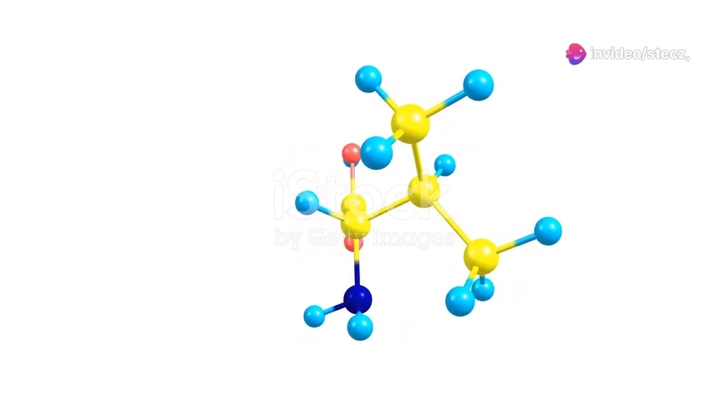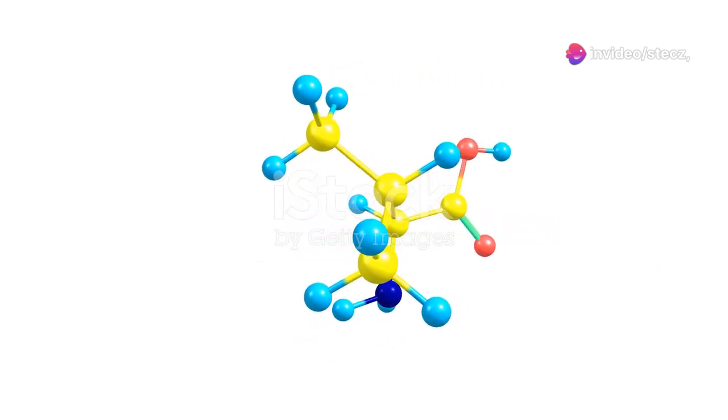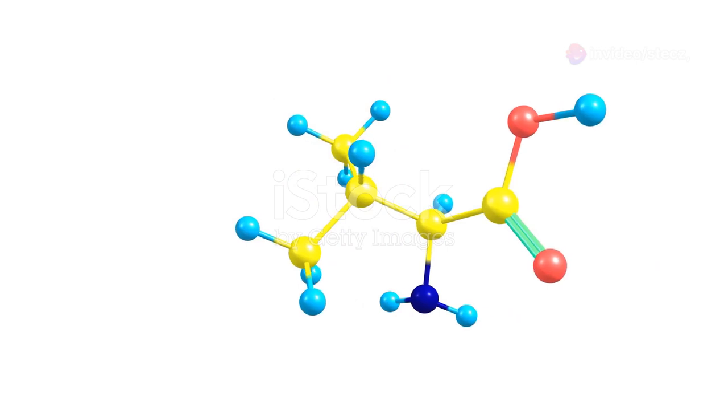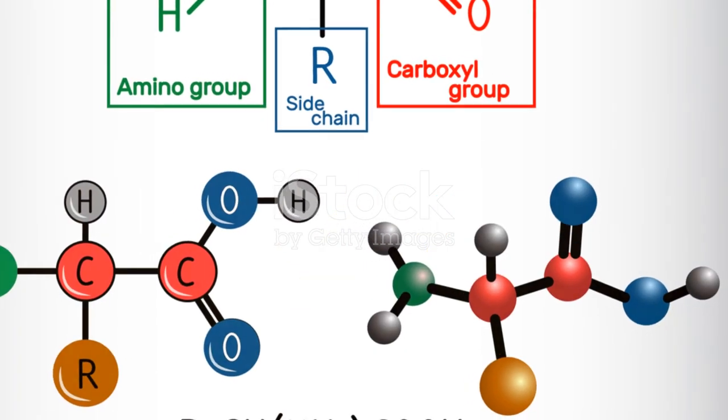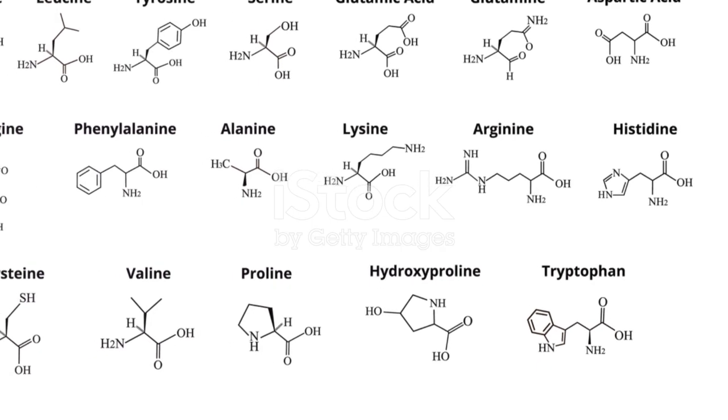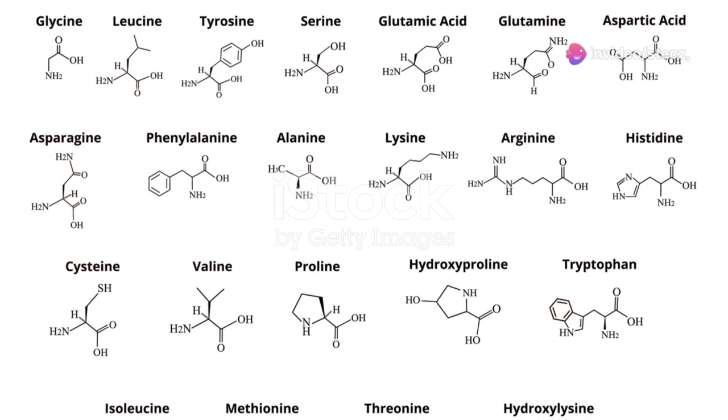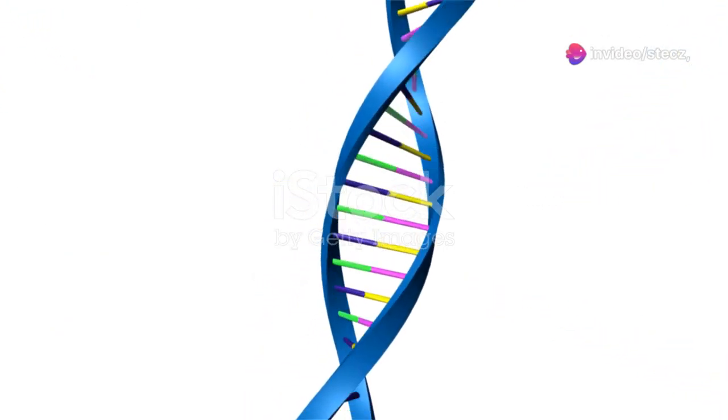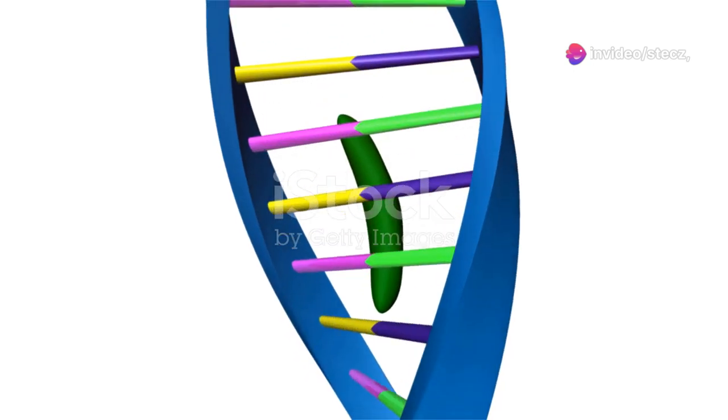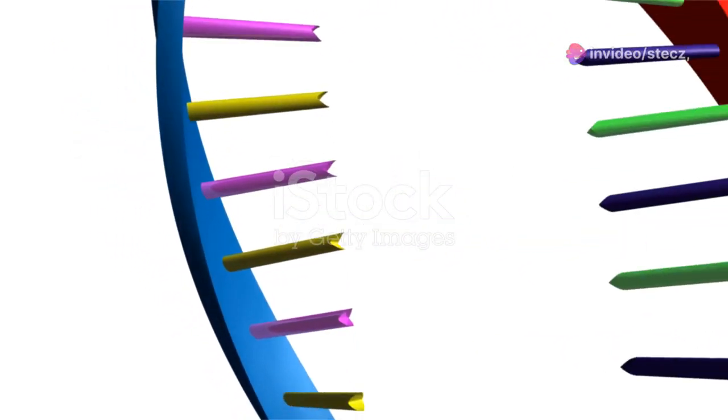Nitrogen is a key component of the amino group, highlighting its essential role in the formation of these vital molecules. Plants possess the remarkable ability to synthesize all 20 amino acids required for protein synthesis. Nitrogen, therefore, plays an indirect yet crucial role in shaping the vast repertoire of proteins that underpin life itself.